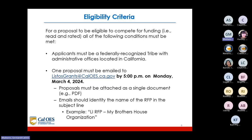For a proposal to be eligible to compete for funding, all of the following conditions must be met: applicants must be a federally recognized tribe with administrative offices located in California. One proposal must be emailed to listosgrants@caloes.ca.gov by 5 p.m. on Monday, March 4, 2024. Proposals must be attached as a single document such as a PDF, and the email subject line should identify the name of the RFP — for example, 'LI RFP My Brother's House Organization.'